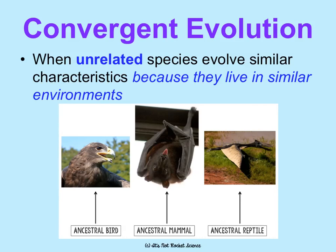Convergent evolution is the opposite. This is when unrelated species evolve similar characteristics because they live in similar environments. For instance, this osprey, this bat, and this pterodactyl all have wings because they all live in the sky — they have a similar environment and all fly. But none of them are actually related evolutionarily. Ospreys evolved from ancestral birds, bats from an ancestral mammal, and pterodactyls are connected to ancestral reptiles. When we say convergent, they've come together because of similar environments — similar traits, but not actually related — the opposite of divergent.